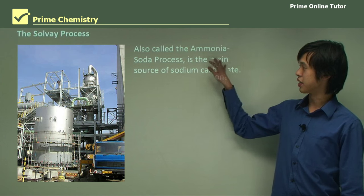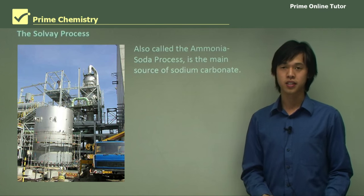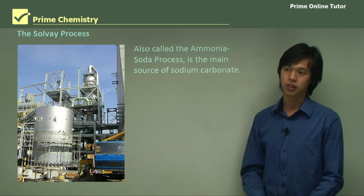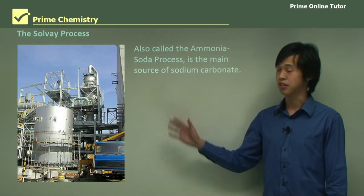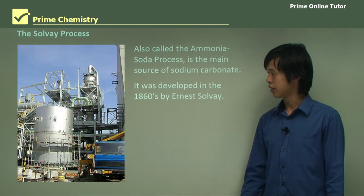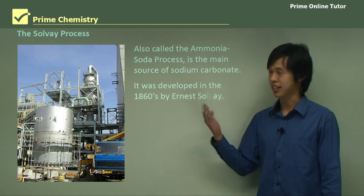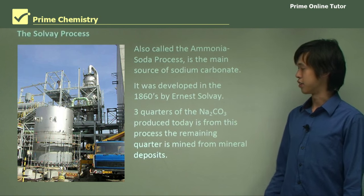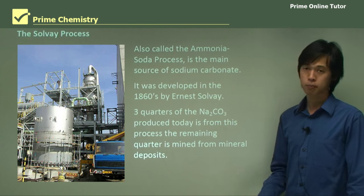It's also known as the ammonia soda process, and you'll see why that is as we go through the process. It's the main source of sodium carbonate in the world. This method is quite old — it was developed in the 1860s by Ernest Solvay, hence the name Solvay process. Three quarters of the Na2CO3 produced in the world comes from the Solvay process, with the remaining quarter being mined.